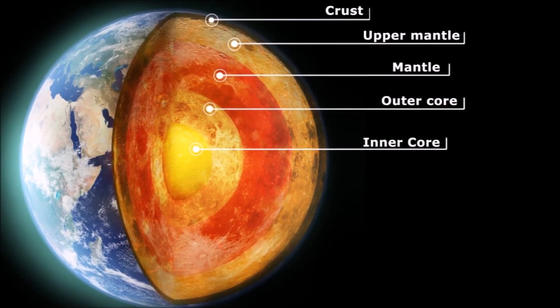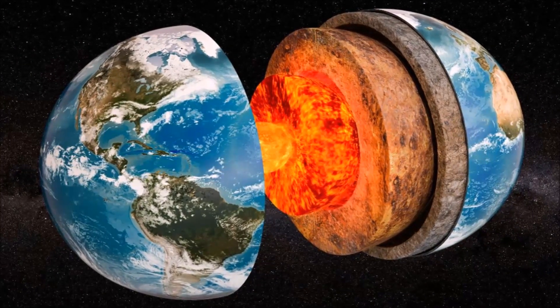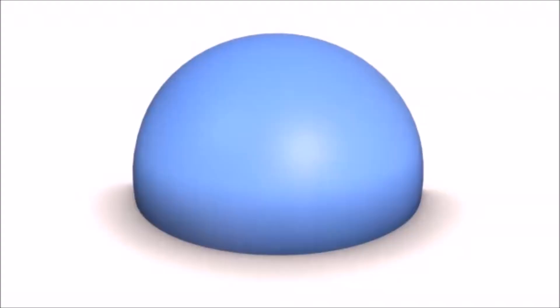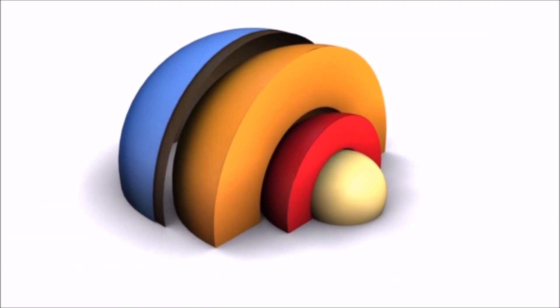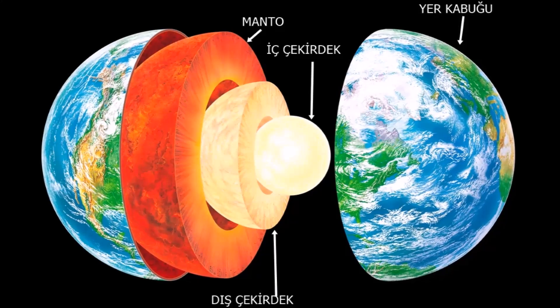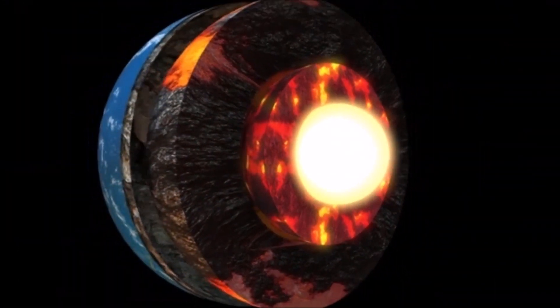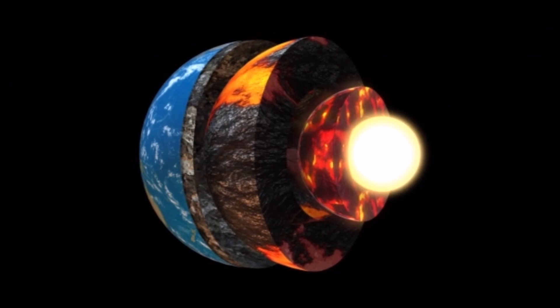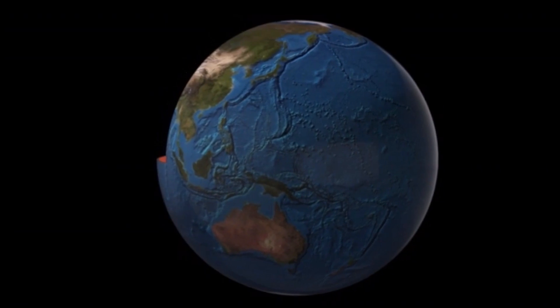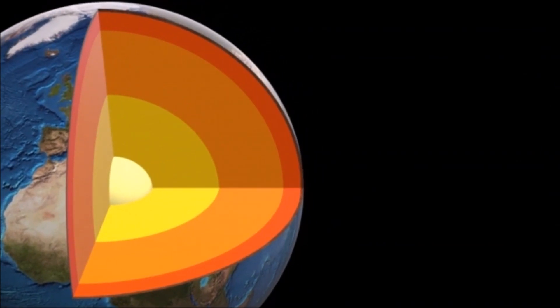Another layer of the Earth is the mantle. The mantle lies between the core and the crust and is approximately 2,900 kilometers thick, making up a large portion of Earth's total volume. Although the mantle is predominantly solid, its upper part, known as the asthenosphere, has a softer and more plastic consistency. The main components of the mantle are silicate minerals, with olivine and pyroxene, which contain magnesium and iron, being the most common. Under heat and pressure, the mantle can exhibit fluid-like behavior, leading to the formation of convection cells that distribute Earth's heat and transport energy upwards, influencing geological processes such as plate tectonics and volcanic activity.